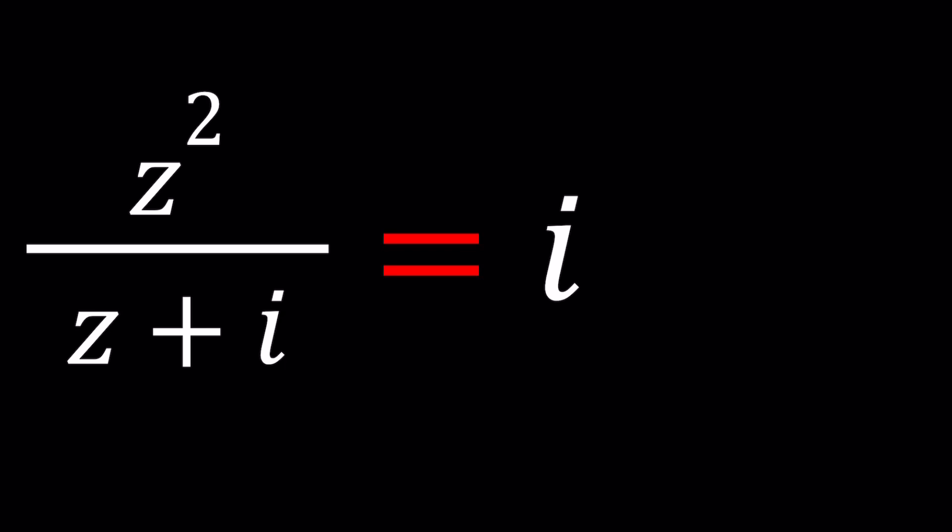So we have z squared divided by z plus i equals i. As you should know, i is the imaginary unit, the number whose square equals negative 1. Sometimes people define i as the square root of negative 1, but you've got to remember it's the principal square root because negative 1 has two square roots in the complex world.